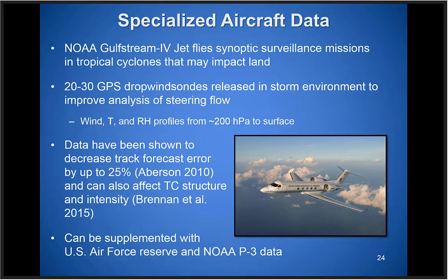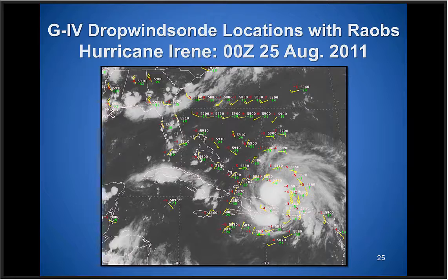We can also supplement the G4 data with flights from the Air Force and NOAA P3 if needed. Slide 25 shows a typical dropsonde pattern from the aircraft around Hurricane Irene — a circle pattern around the storm itself, with a flight track that tries to sample areas where additional initial data will help. For recurving systems in the Atlantic, this often means sampling the western extent of the subtropical ridge. The zigzag pattern of dropsondes between Florida and north of the Bahamas tries to capture that detail on the western side of the ridge, with the coverage optimized to complement the 12Z radiosonde network and fill in the gaps.